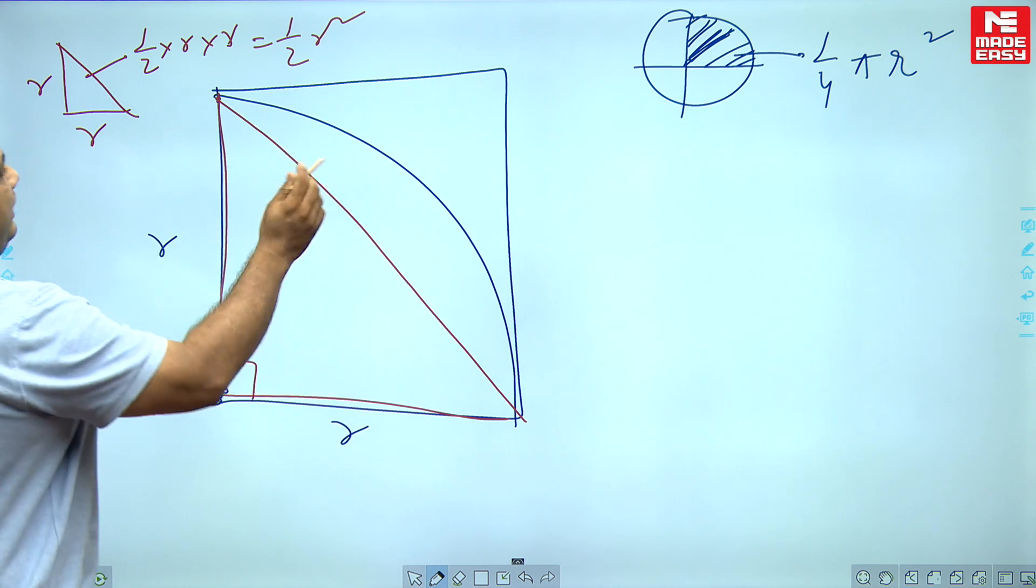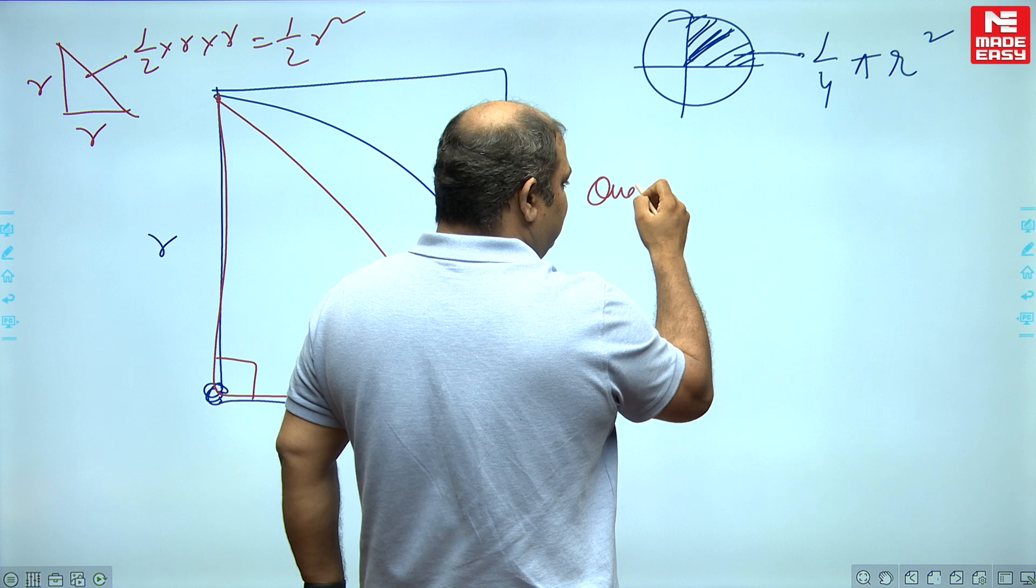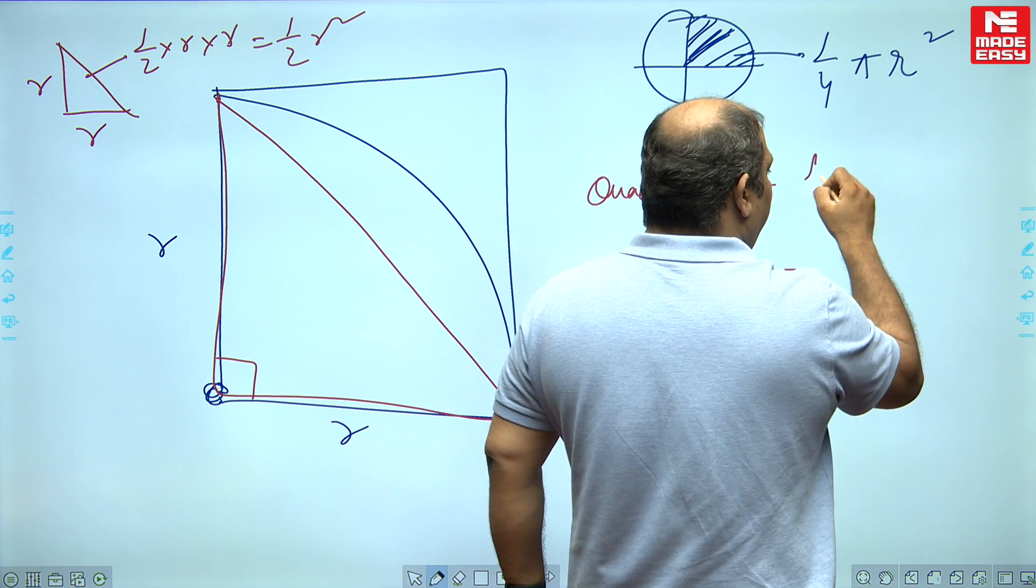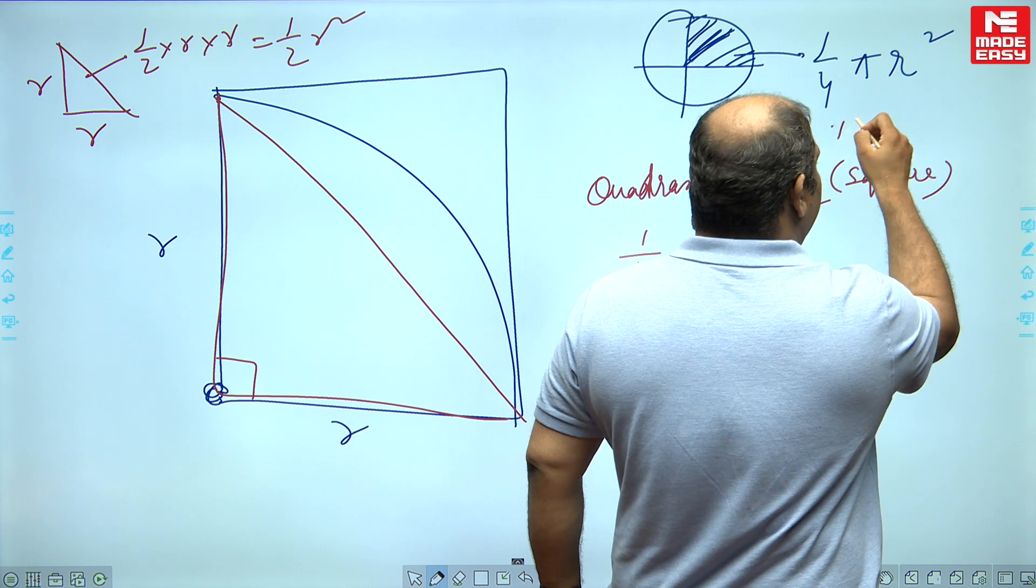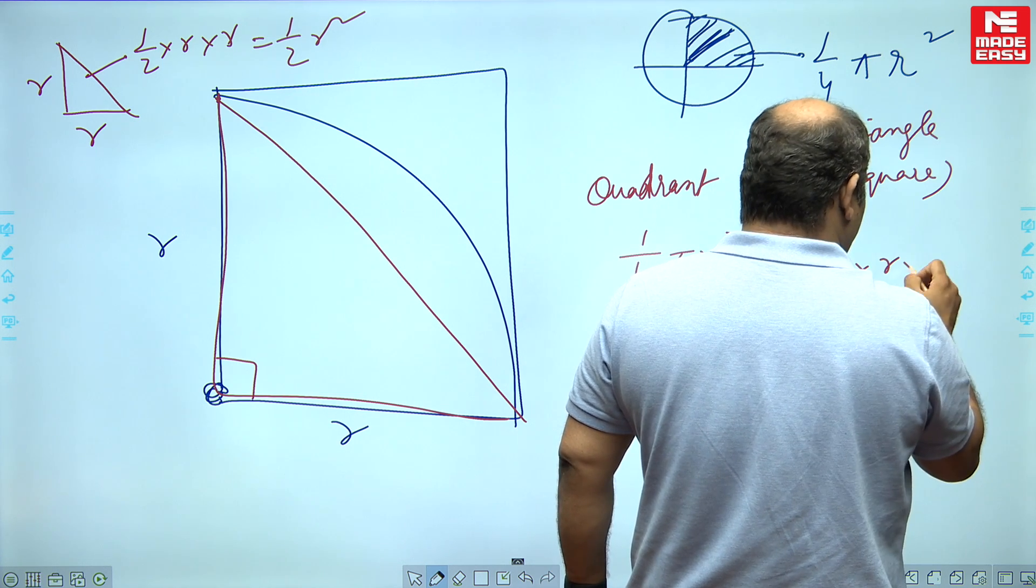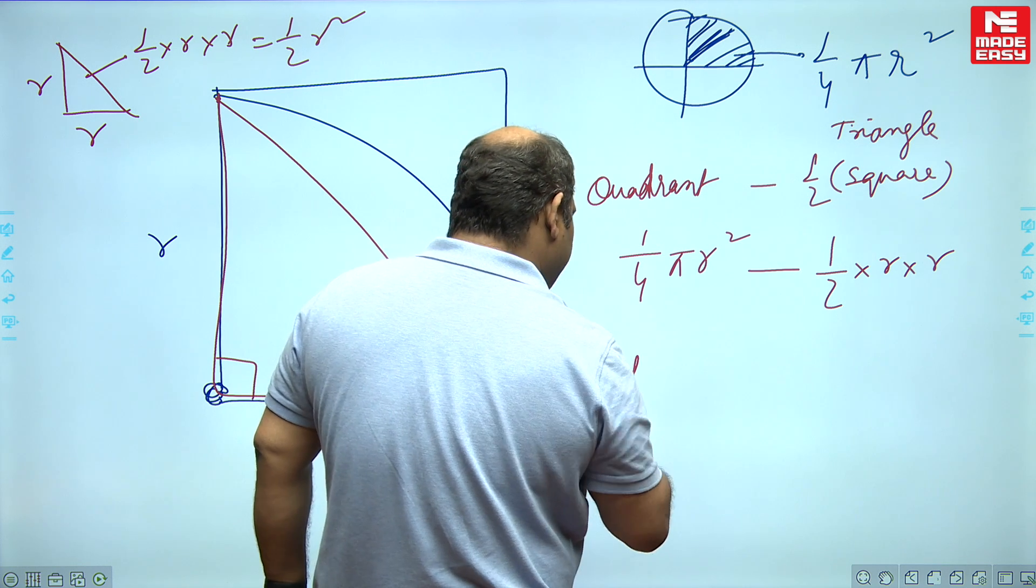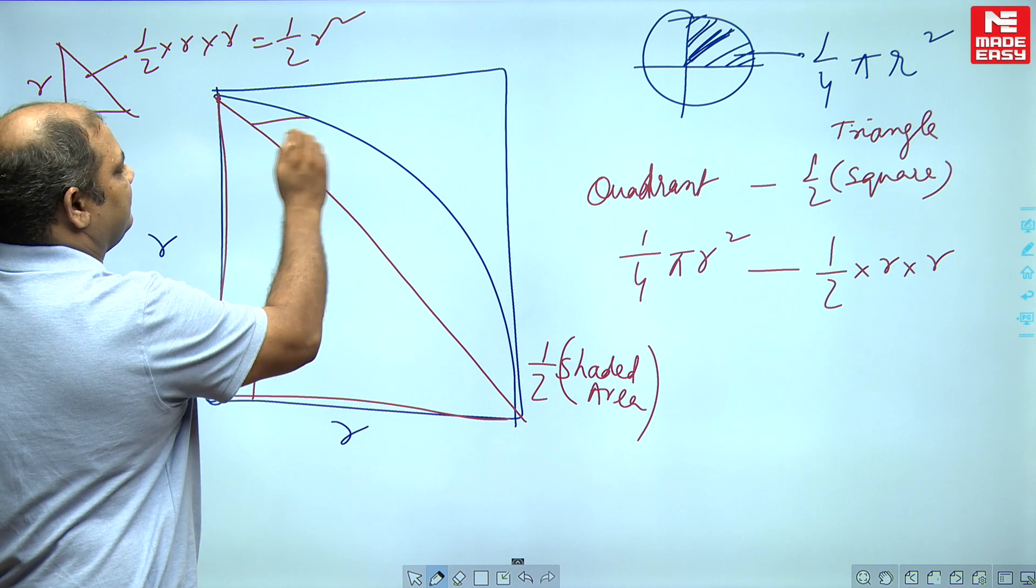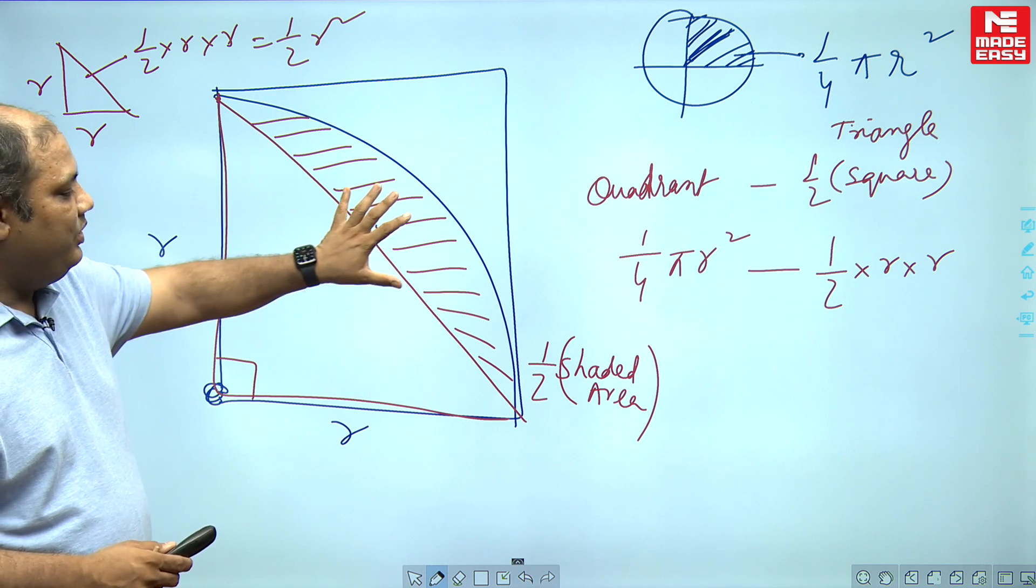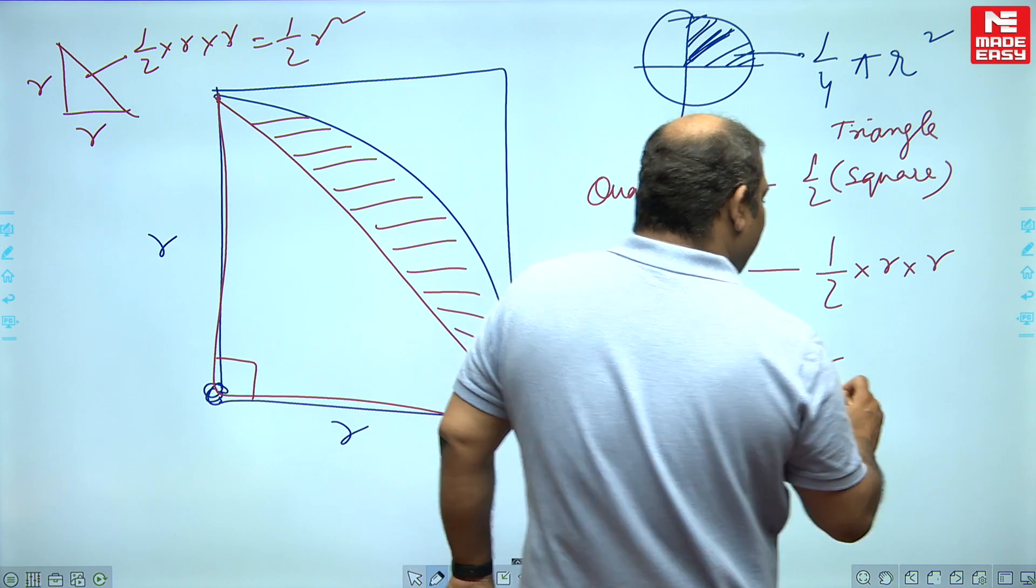From the entire quadrant if I subtract the triangle, basically from one fourth of a circle if I subtract half of square which is the triangle, I am going to get half of the shaded area. So half of shaded area is one fourth of pi R square minus half of R square.